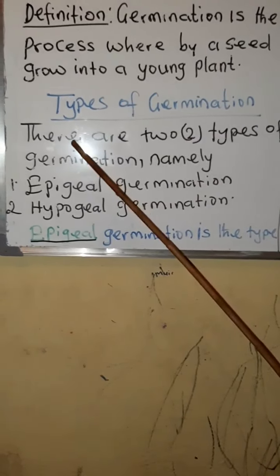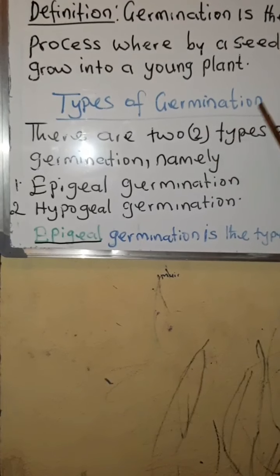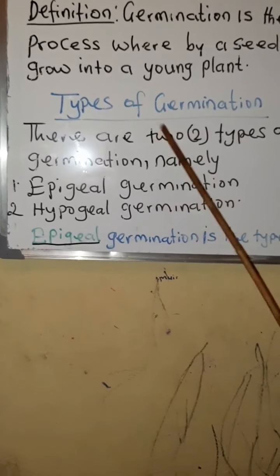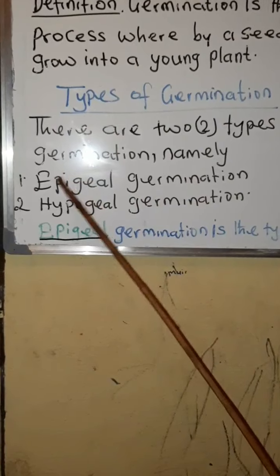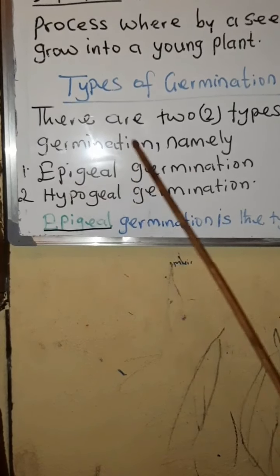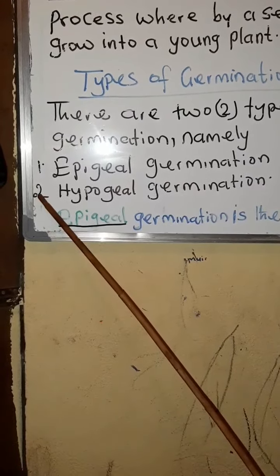Types of germination. There are two types of germination: number one, epigeal germination, and number two, hypogeal germination.